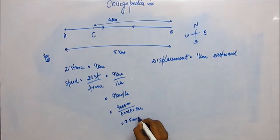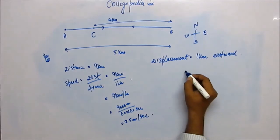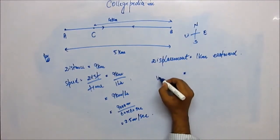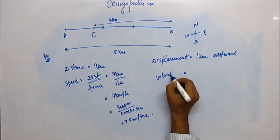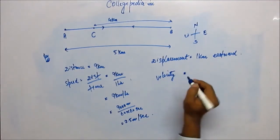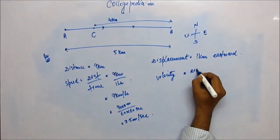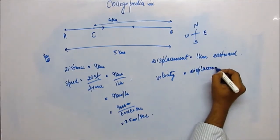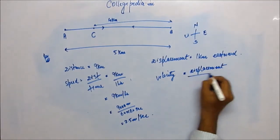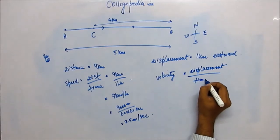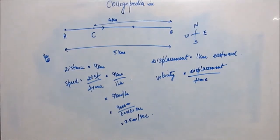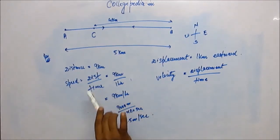Similarly, if you calculate velocity, velocity is defined as displacement upon time. It's defined parallel to speed. As speed is distance upon time, velocity is displacement upon time. Distance is a scalar quantity, so speed is a scalar quantity. Displacement is a vector quantity, so velocity carries direction.